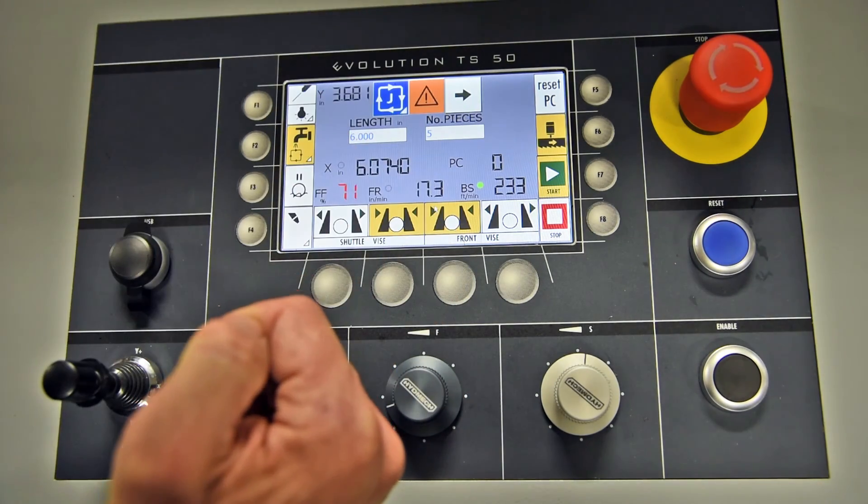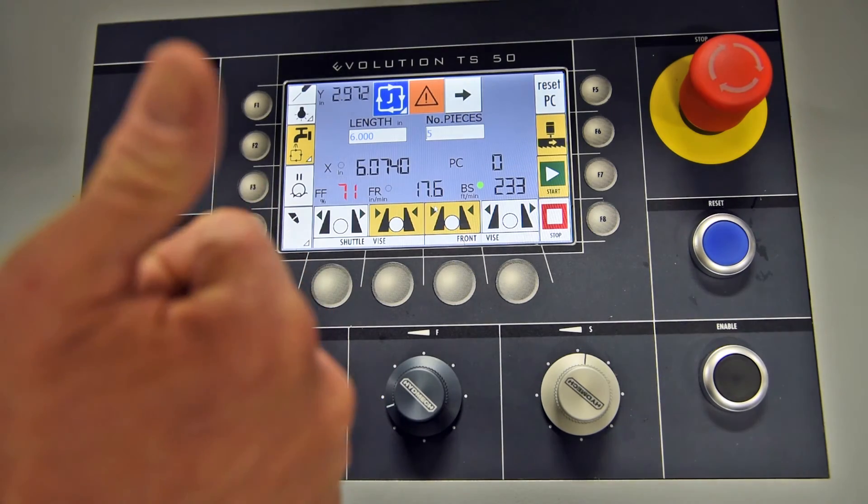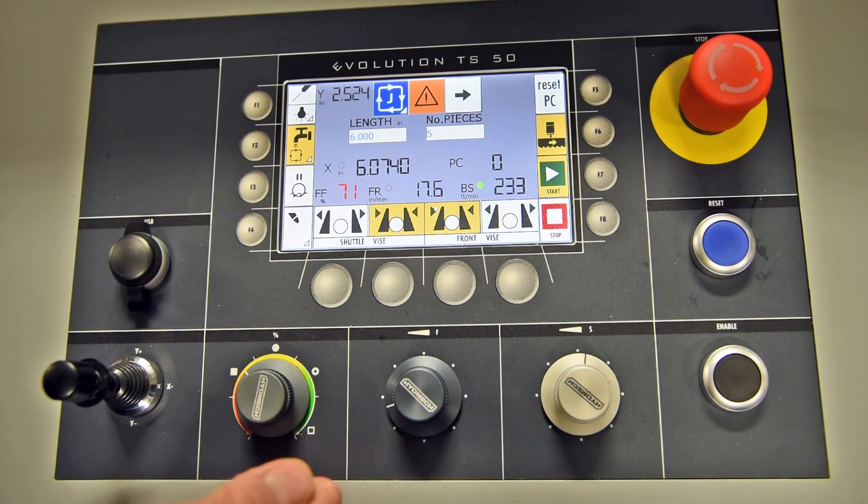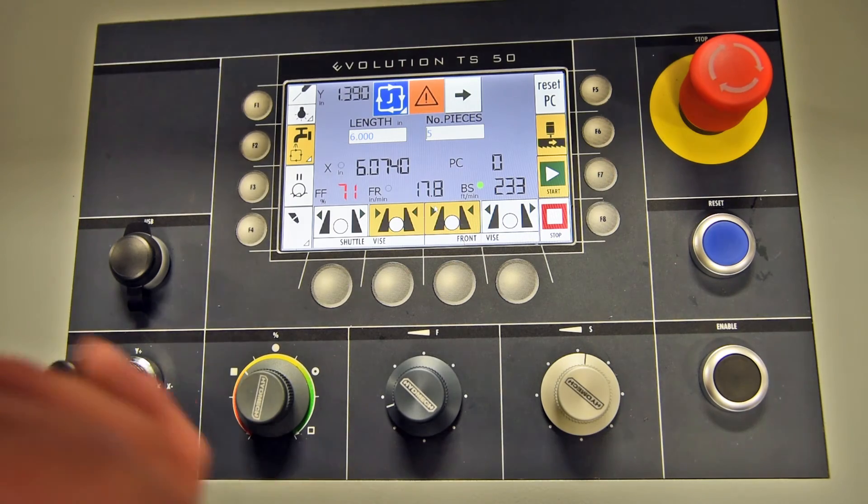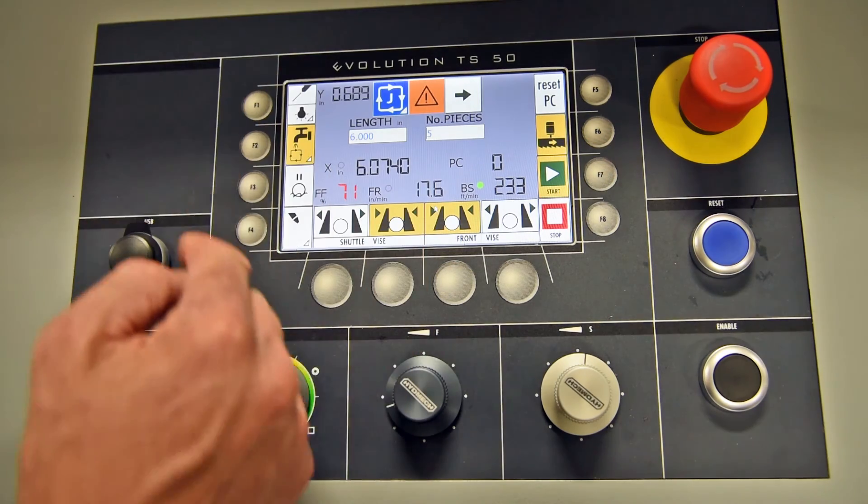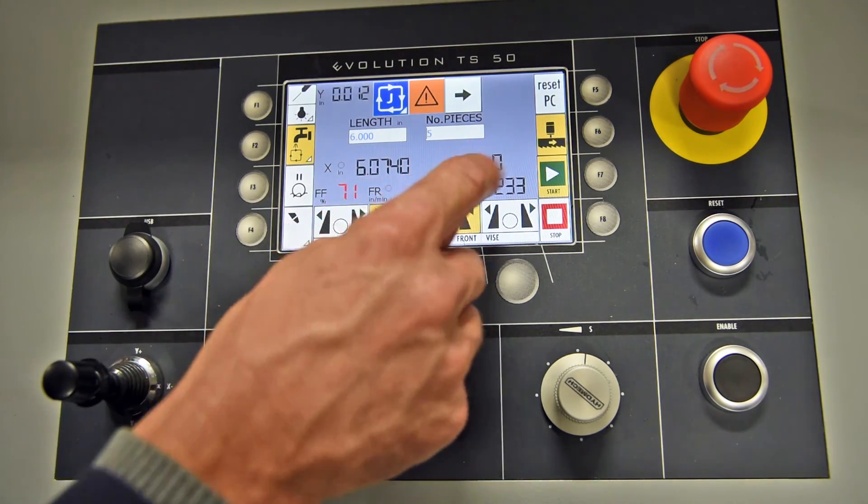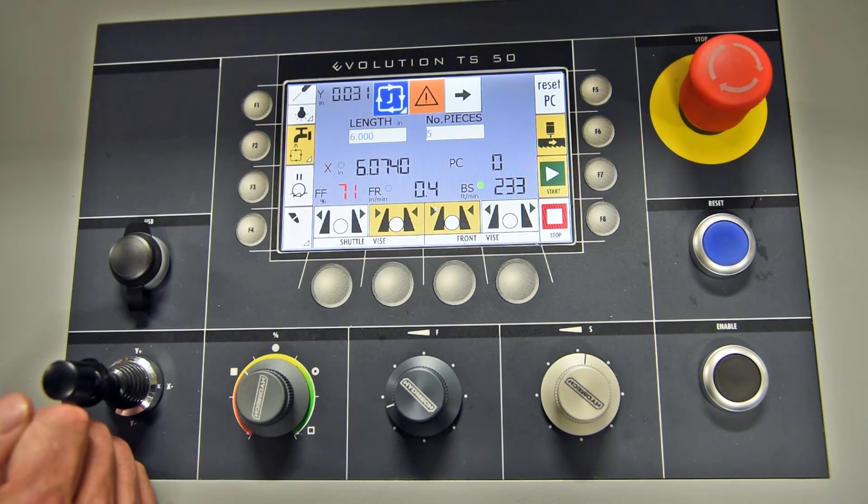At the end of the cut period, it will raise back up to its upper limit. At this point, it will index in the material. It will clamp. It will go down for the cut. It will continue the cycle until my PC matches my number of pieces.